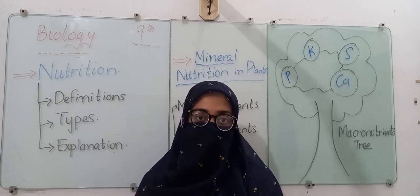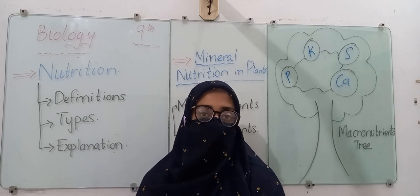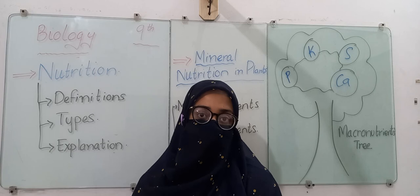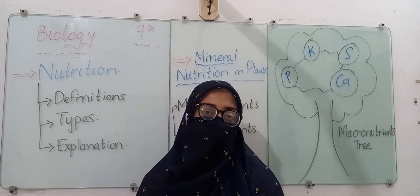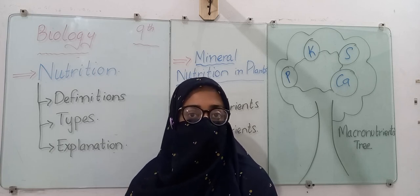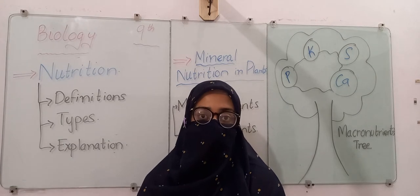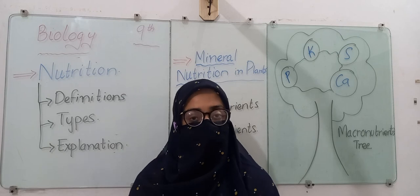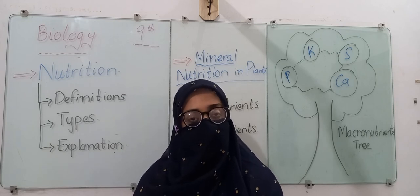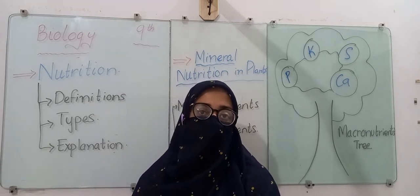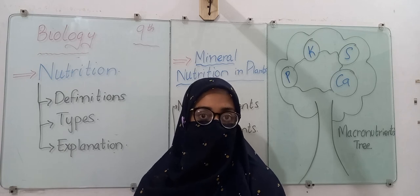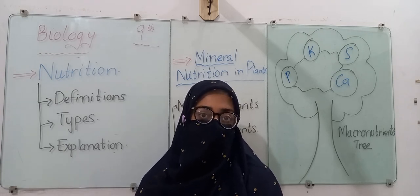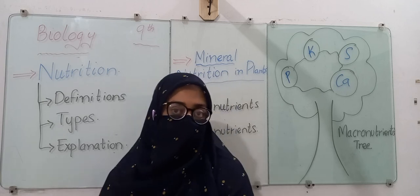A very common example of heterotrophs is human beings. We cannot synthesize our own food using carbon dioxide and water, so we obtain food from two major sources. First, we eat different kinds of vegetables from plants. Second, we also eat animals. These are the two basic types of nutrition.